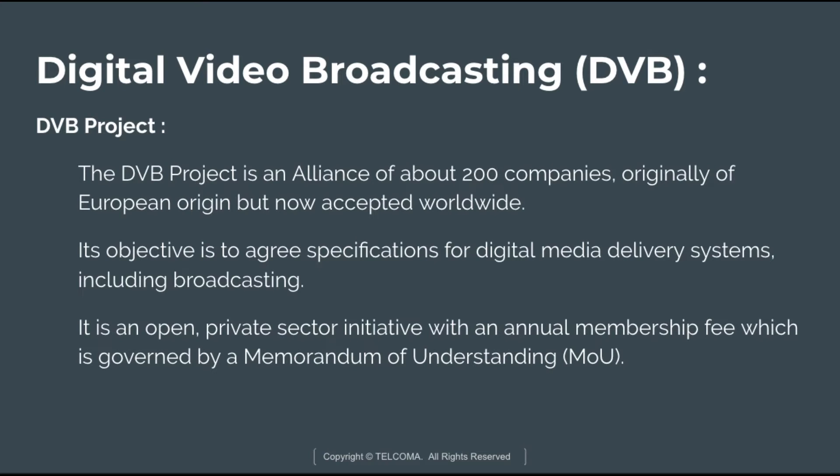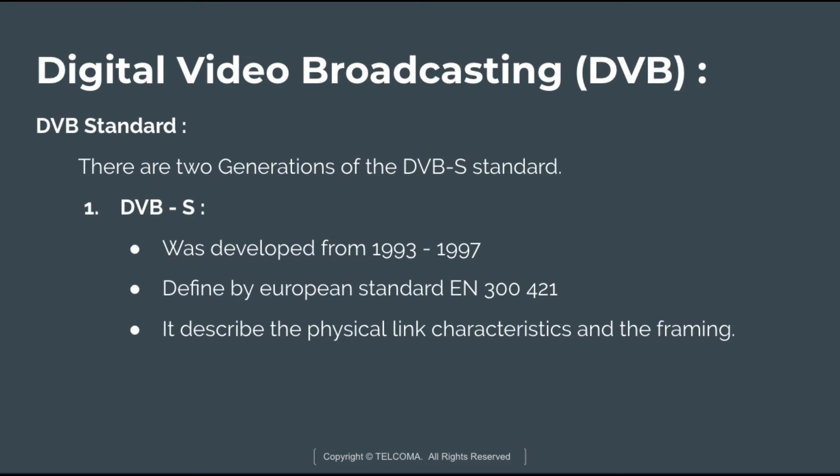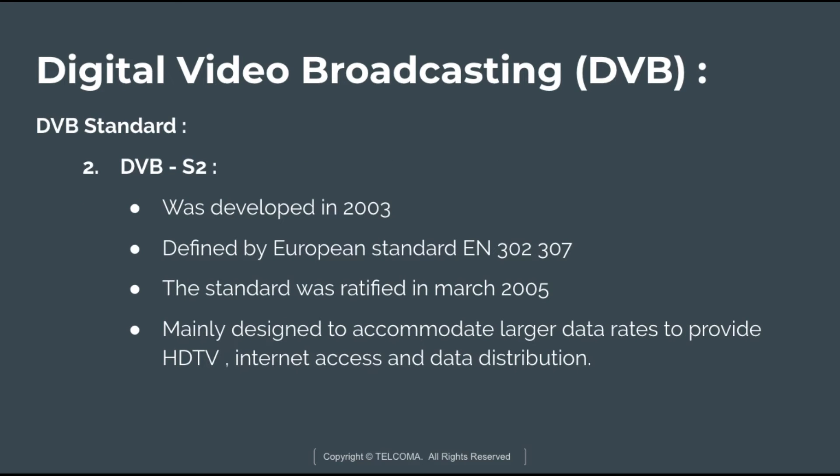There are two generations of DVB-S standards. The first is DVB-S, developed from 1993 to 1997, defined by European Standard EN 300 421. It describes the physical link characteristics and framing. Standardization of both generations was done by ETSI and the Digital Video Broadcasting Project.